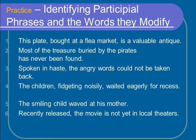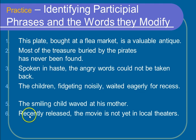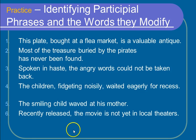It's a one-word phrase. And number six: 'Recently released, the movie is not yet in local theaters.' Which movie is not yet in local theaters? The one that was recently released. This is another tricky one because my participial phrase starts with the word 'recently,' but that's not my participle — 'released' is my participle. But since 'recently released' answers the 'which' question, it becomes my participial phrase.